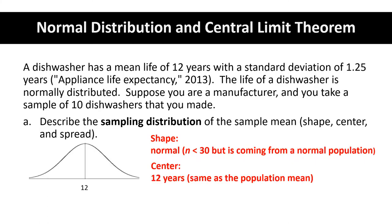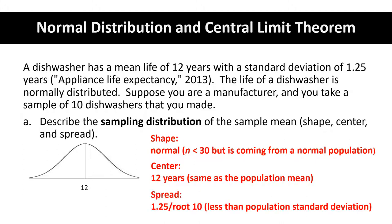The spread is what changes — it is always going to be smaller, and is dependent upon the sample size. We call this spread a special name: the standard error. It equals the population standard deviation sigma divided by the square root of the sample size. In this case sigma is 1.25 and the sample size is 10, so the spread for this sampling distribution will be smaller than the population standard deviation. Using a calculator, the standard error rounded off is 0.395.